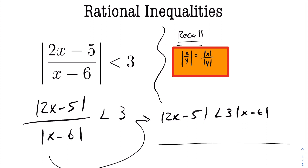Now we draw a number line. We have two values of interest: five over two and six. That generates three intervals. Let's examine what inequalities exist in each interval and solve them.